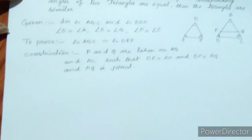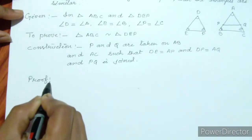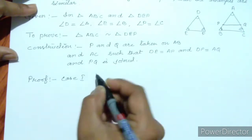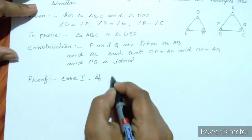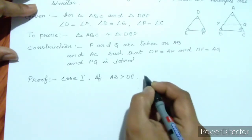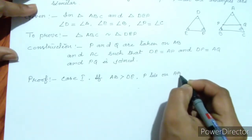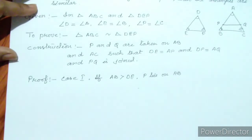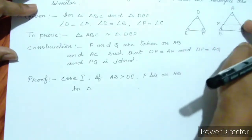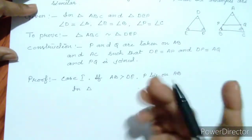First case: if AB is greater than DE, then P lies on AB. We check that triangle DEF and triangle APQ satisfy the congruence conditions.